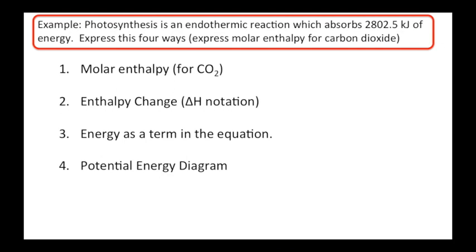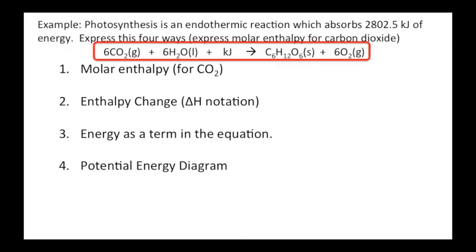Here is one for you to try. Photosynthesis is an endothermic reaction, which absorbs 2802.5 kilojoules of energy. Express this four ways. Express molar enthalpy for CO2. So, we want to say this. This is our message. This is our love poem. We want to say it four different ways. So, how would you start this? Well, if you're stuck, that's the little trick I put in here. You've got to balance the equation first. So, you've got to know what photosynthesis is. Oh, yeah, that's what it is. So, it's that plus that plus kilojoules of some kind go here and produce products, glucose, and oxygen.